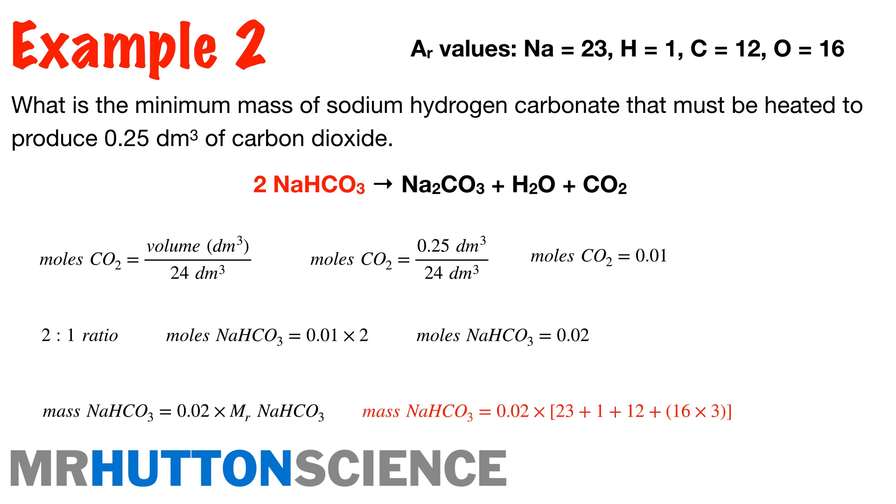Then we can just simply work out the MR of our sodium hydrogen carbonate and multiply it by our moles to give us the mass of sodium hydrogen carbonate. So the mass of sodium hydrogen carbonate equals 0.02 times the MR of sodium hydrogen carbonate, which will work out there. Those numbers, you've got your AR values at the top of the screen there, but also they are from the periodic table. They are the larger numbers. Remember, the mass number is the larger number in those boxes of the elements on the periodic table. So in the answer to this sum, we get 1.68 grams.